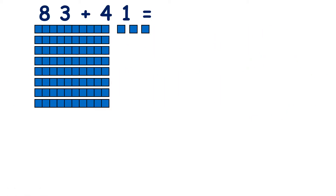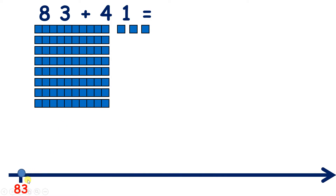Now to make sure we're clear about what we're doing here, let's do 83 plus 41 again, but this time with blocks, so we can show how adding 4 tens and 1 unit changes the number. So we start with 83, and we have 8 tens and 3 units.